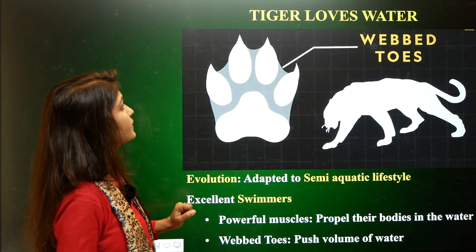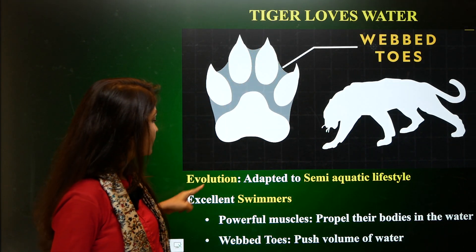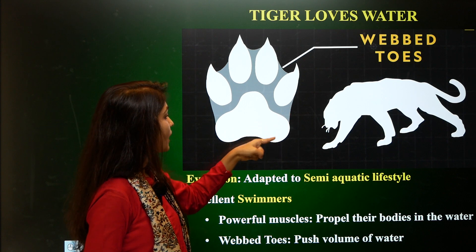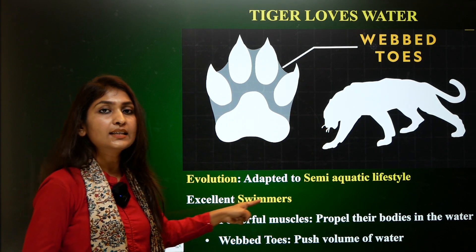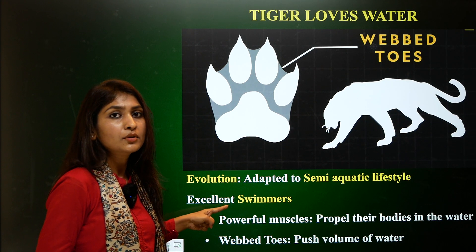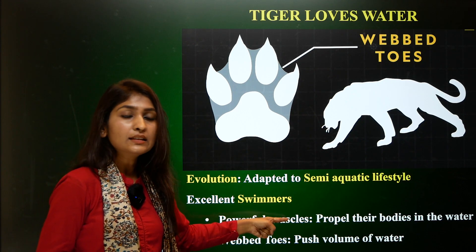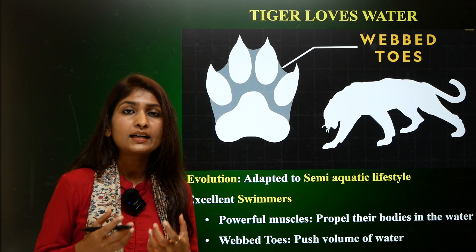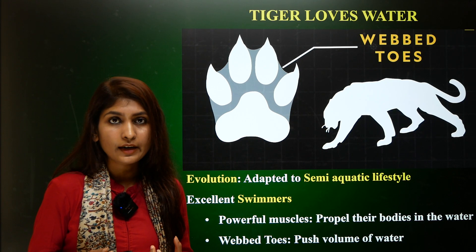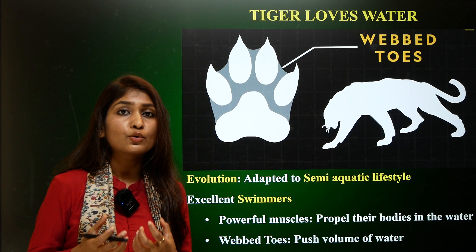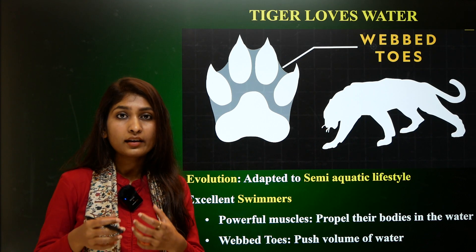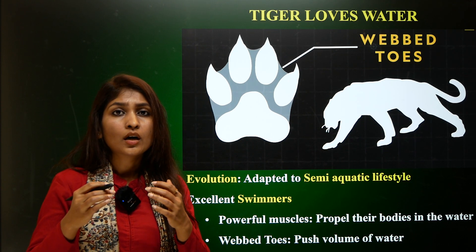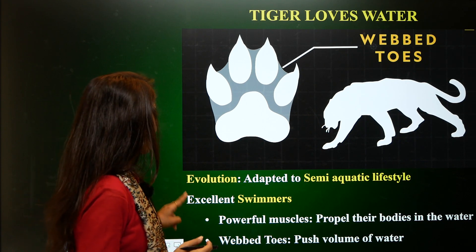The tiger loves water and is adapted to a semi-aquatic lifestyle. The evolutionary pattern of the tiger shows that a webbed pattern is present in its toes, and tigers are excellent swimmers. Two factors make tigers excellent swimmers: powerful muscles and webbed toes. The tiger weighs heavier than a lion due to its muscular weight. These muscles propel the tiger's heavy body through water, and the webbed toes help move the volume of water while swimming.